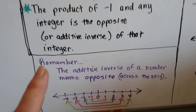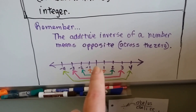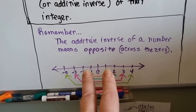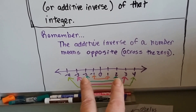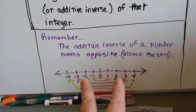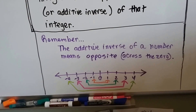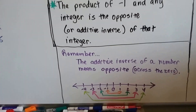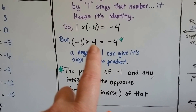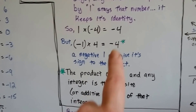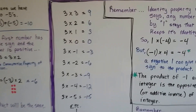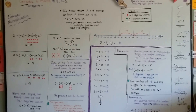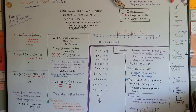Do you remember what the additive inverse was? On a number line, positive 1 is the additive inverse of negative 1 because when you add them together, they cancel each other out. Negative 2 and positive 2 are opposites — add them together and they equal 0. Negative 3 and positive 3, negative 4 and positive 4 — they're the additive inverse. So when we do negative 1 times 4, it becomes the additive inverse, the opposite. I'm going to make 9.6b and continue talking about integer multiplication — now we're going to do a negative times a negative. I'll see you there. Bye.